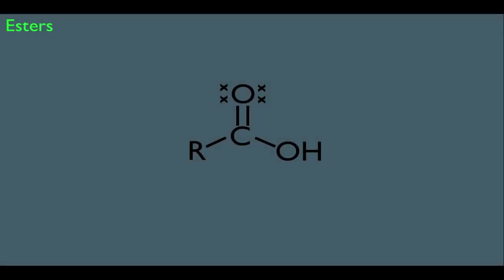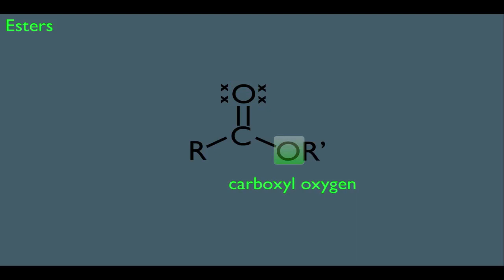Now let's discuss the nomenclature of esters. They're a derivative of a carboxylic acid, so instead of a carboxylic acid, we replace the OH with an OR group — this is our ester. Before we name them, let's get some vocab down. From now on, when it comes to an ester, we're going to refer to the oxygen doubly bonded to the carbon as the carbonyl oxygen, and this other oxygen as the carboxyl oxygen.